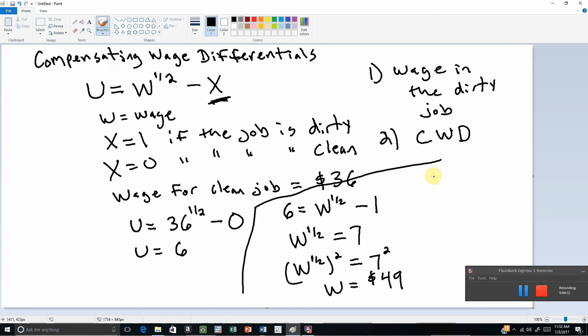So the last thing is the compensating wage differential. The compensating wage differential is just the wage in the dirty job minus the wage in the clean job, and this equals $13. So the compensating wage differential is $13. Workers must be paid an additional $13 an hour to take on the unpleasantness of working in such dirty conditions. I hope you found this video helpful.